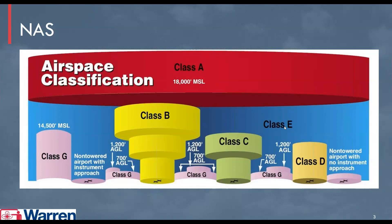That brings us to Class E airspace. Class E is all the airspace around the United States that is not Class A, B, C, D, or G. Sometimes this is called everyone's airspace. Class E is controlled by air traffic control, as are Classes A, B, C, and D, so you would need permission to be flying in this area.